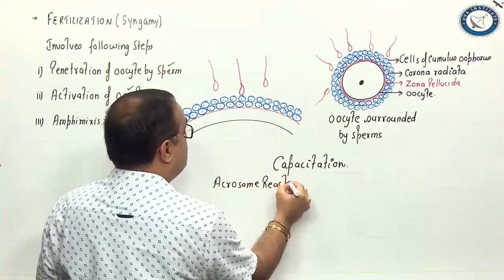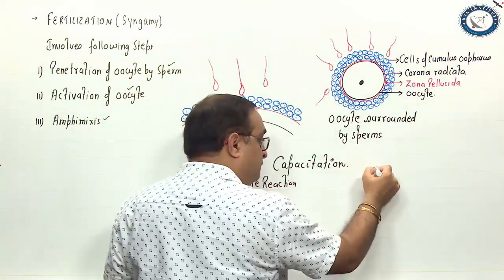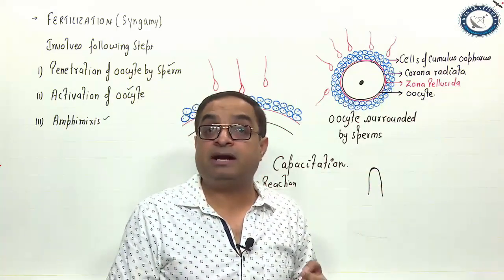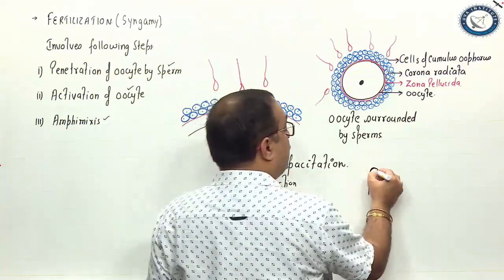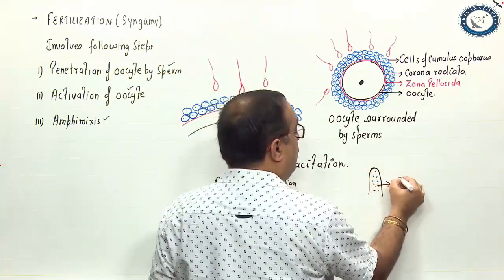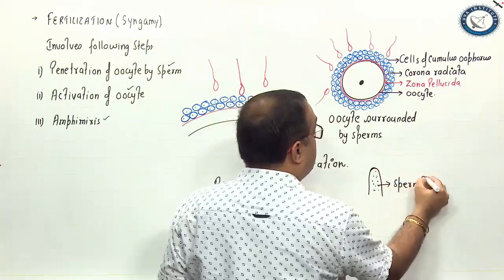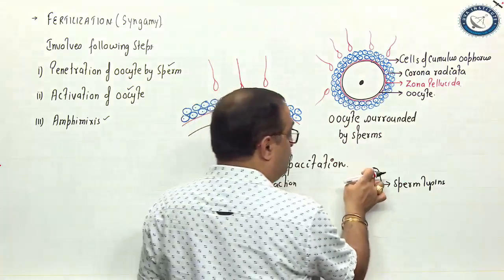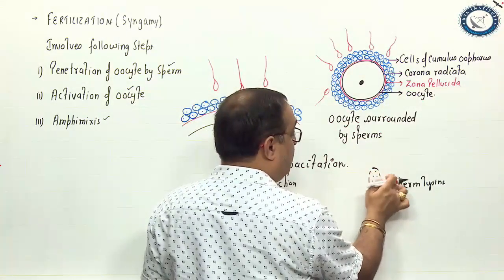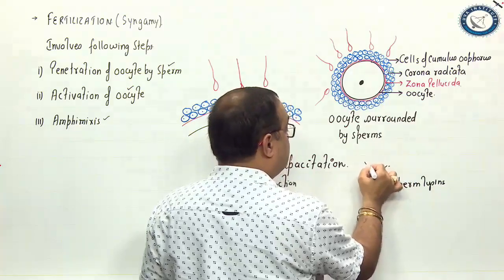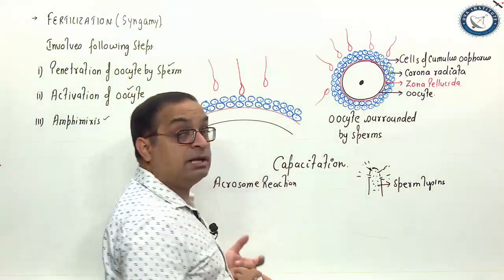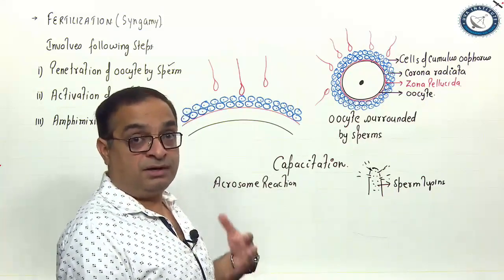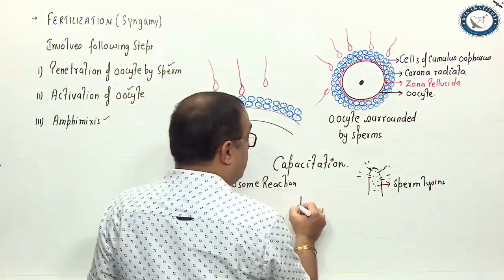What is acrosome reaction? The acrosome of the sperm which develops from the Golgi complex can be compared to a modified lysosome. The acrosome has many hydrolytic enzymes which are collectively called sperm lysins. During acrosome reaction there is formation of pores in the acrosomal membrane and release of acrosomal contents. The acrosomal contents are sperm lysins.